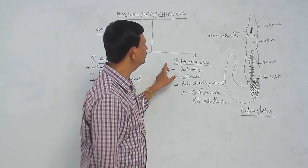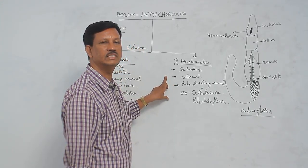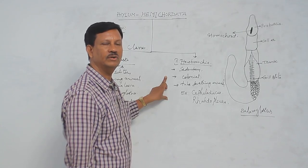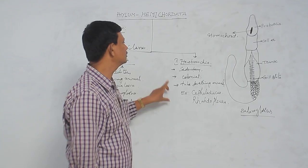And next, Tyrobranchia. These are sedentary animals. They are not free-swimming animals. They are found in the marine water, and in the marine water, just like a plant, they are attached to the substratum.